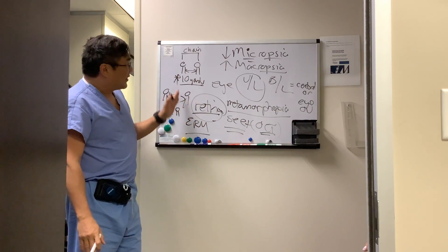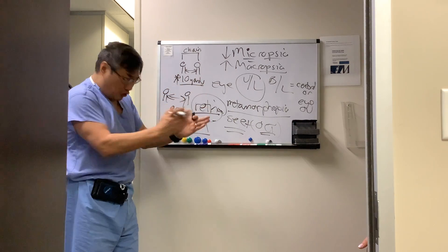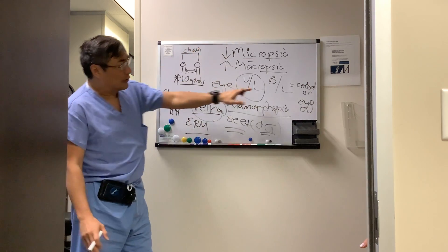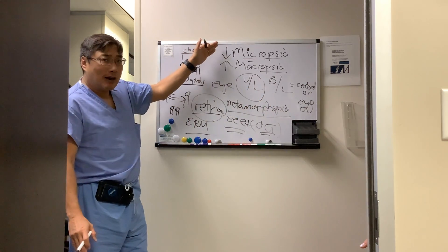And so the movement of the photoreceptors, too close or too far, produces the symptom of unilateral or bilateral macropsia and micropsia.